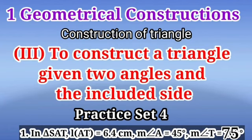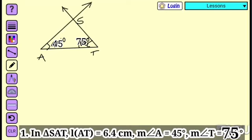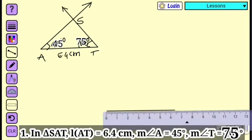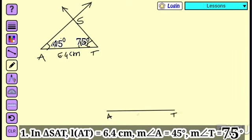Today we are learning about the third type: constructing a triangle given two angles and the included side. We solve the practice set. For the example, in triangle SAT, length AT is equal to 6.4 centimeter, measurement of angle A is equal to 45 degrees, and measurement of angle T is equal to 75 degrees. First of all, draw the rough figure. According to the rough figure, length AT is equal to 6.4 centimeter.